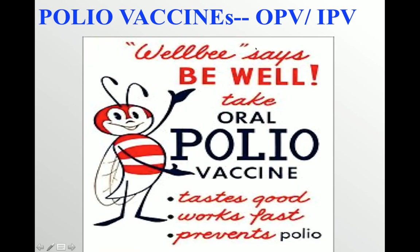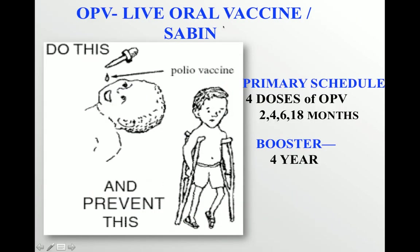Talking about the polio vaccines: the oral polio vaccine, also known as Sabin vaccine, is a live attenuated vaccine. If given early in life, it prevents the flaccid paralysis associated with this virus. The primary schedule recommended by WHO includes four doses at ages two months, four months, six months, and 18 months, with a booster dose at four years.